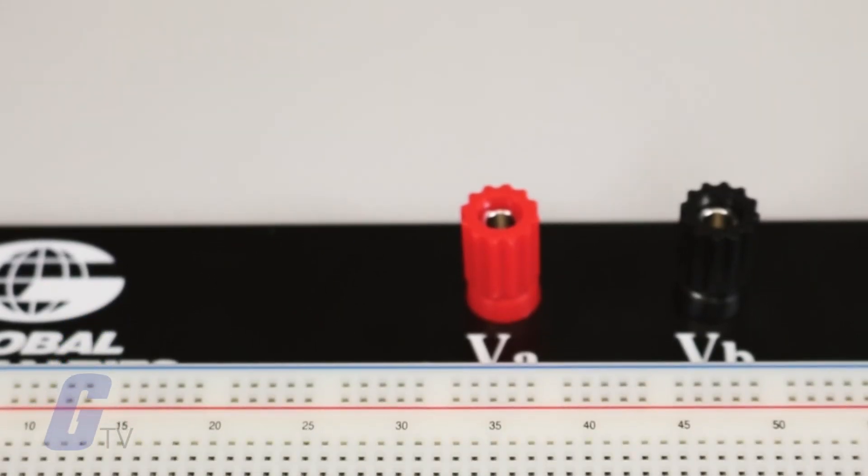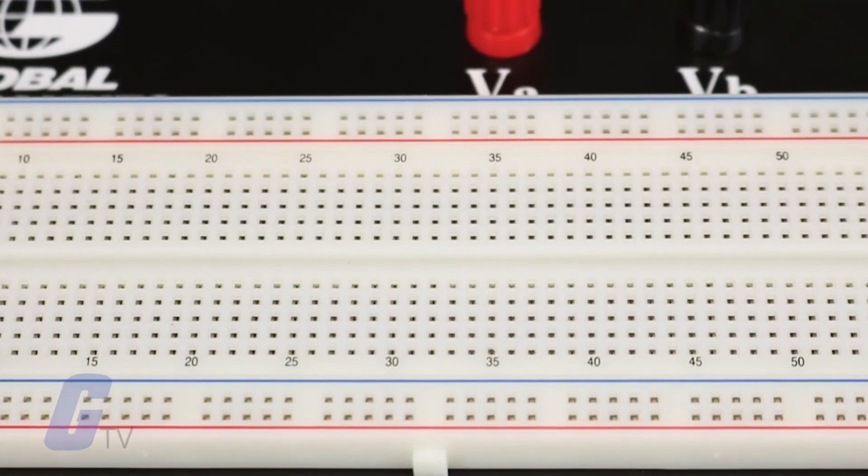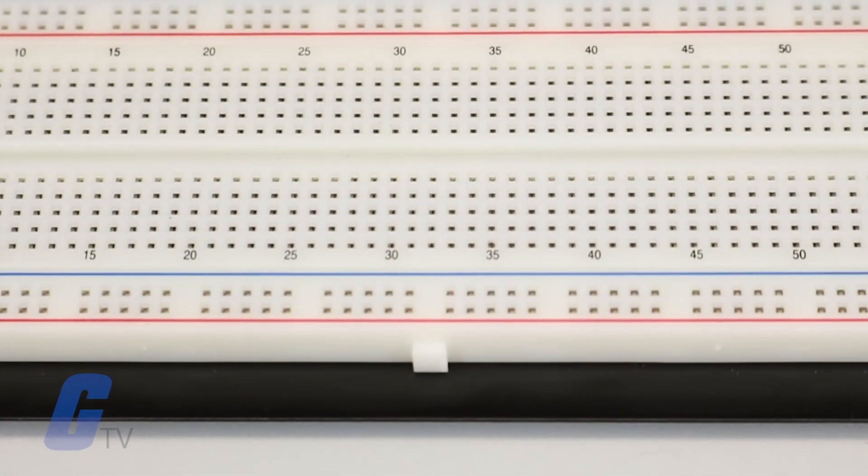However, buses on the opposite sides of the breadboard are not connected to each other, but they can be connected through the use of jumper wire.